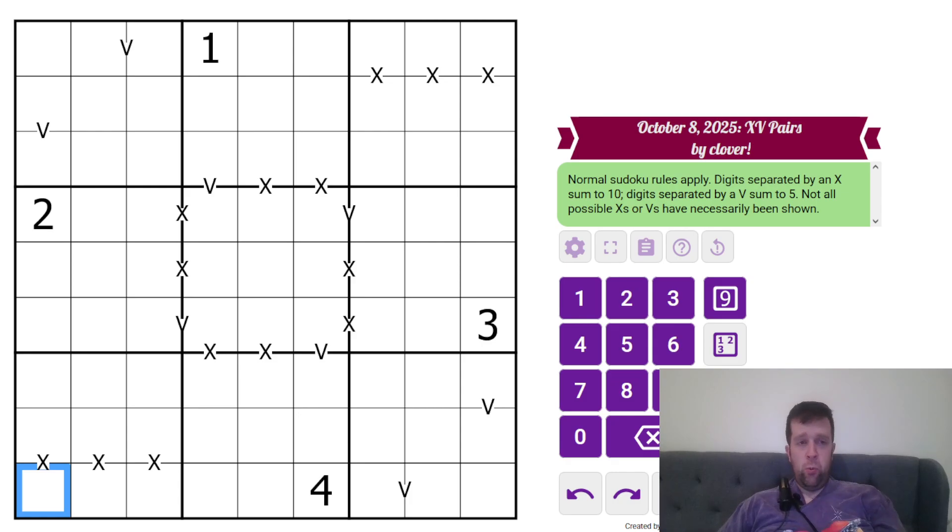Now, we also have some digits separated by a V. They must sum to five. So for example, this couldn't be one four, so it must be two, three. And then digits separated by an X must sum to 10. Not all digits have, not all possible X's or V's have necessarily been shown. That's all you need to know to solve today's puzzle. And that being said, I'm going to get into it now. So let's do it.